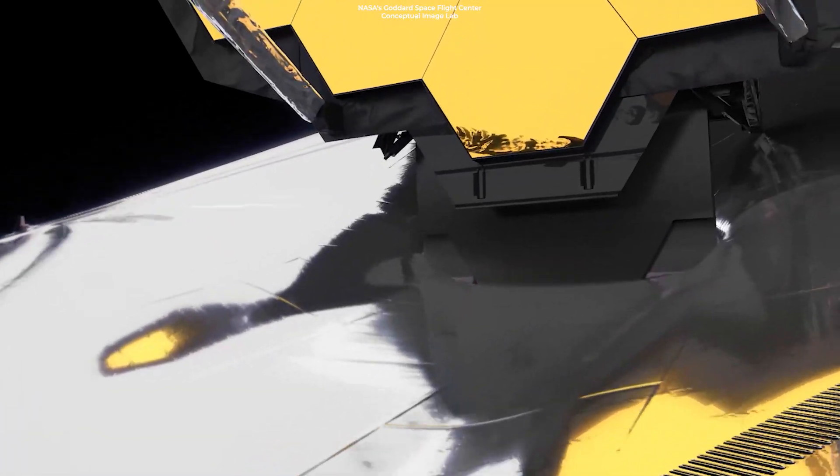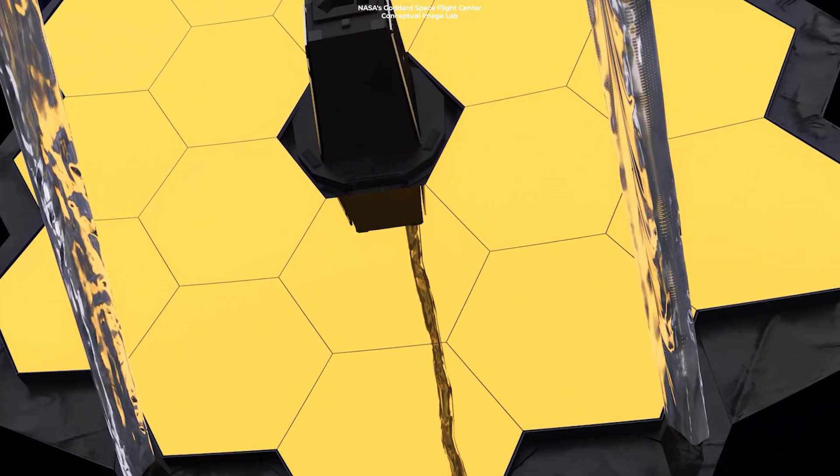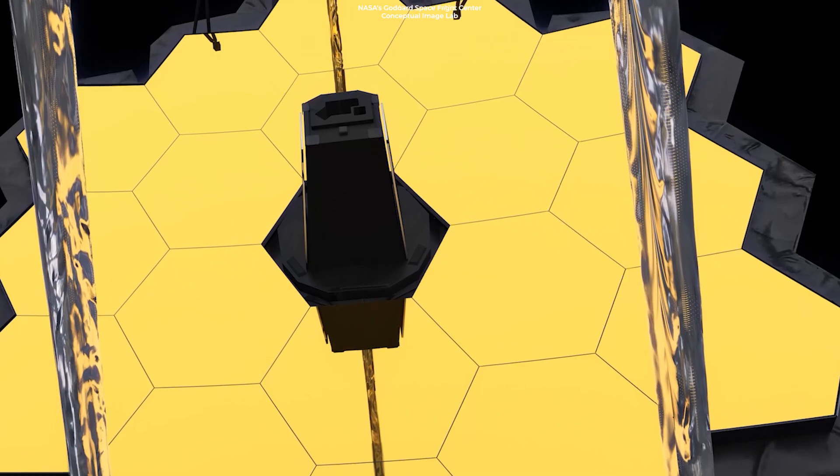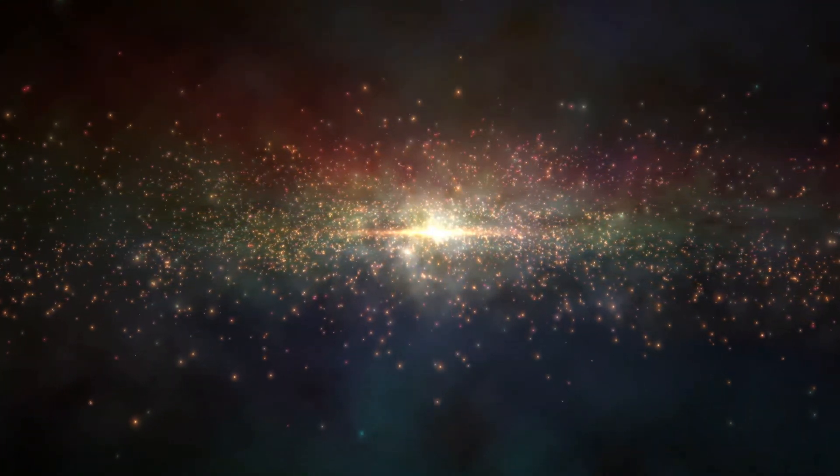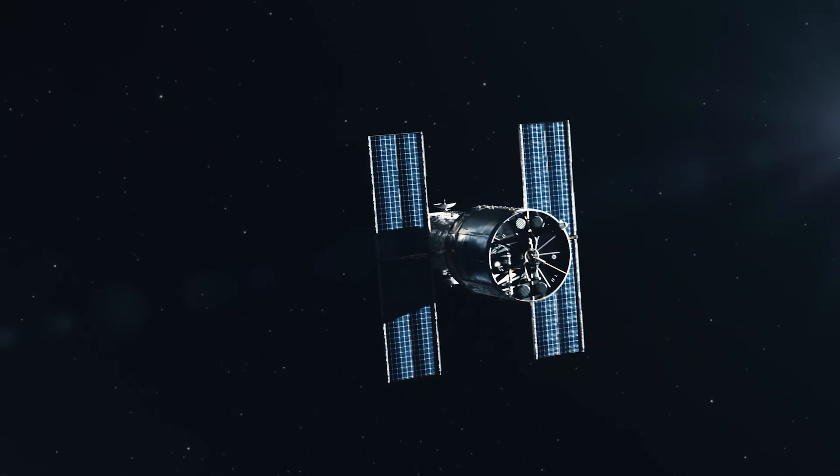Scientists designed JWST to look farther back in time than any other telescope, and that's all thanks to its large primary mirror. Additionally, its infrared instruments allow it to peer through the dust that conceals visible light from telescopes like Hubble.